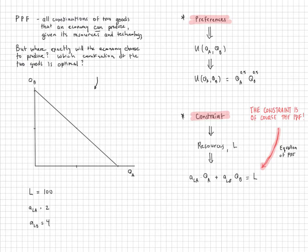So then again, where on this PPF will we be? Given these numbers, we know that the maximum amount of A that we could produce is equal to 50. So this intercept is 50.